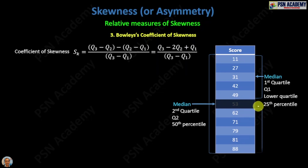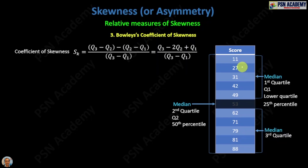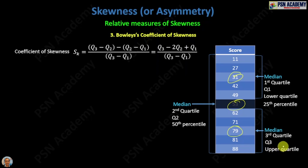In the other half there are also five members, so you take the median of that half. This median is called the third quartile. So we have the first quartile, the second quartile, and the third quartile. Q3 is also written Q suffix 3, also called the upper quartile, and is also the 75th percentile.